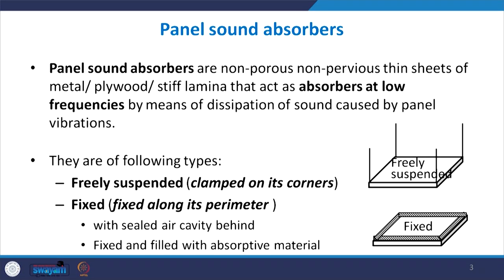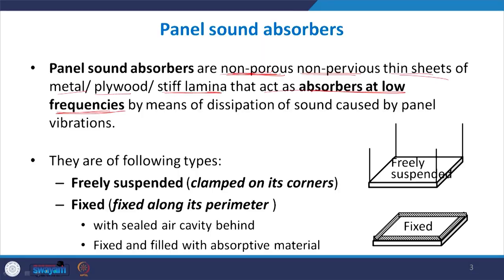Panel sound absorbers are non-porous, non-pervious thin sheets of metal, plywood, or some stiff lamina, and they act as absorbers at low frequency. These non-porous materials are more durable because they don't need timely cleaning. They typically act as absorbers at low frequencies by dissipating sound energy caused by panel vibrations.